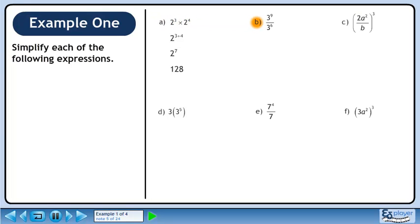Now we'll move on to part b. We are dividing powers, so subtract the exponents. This gives us 3 raised to the power of 3. 3 cubed evaluates to 27.